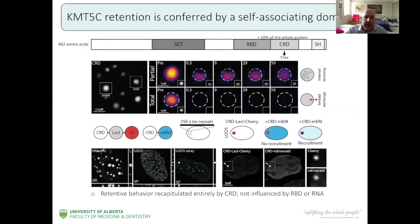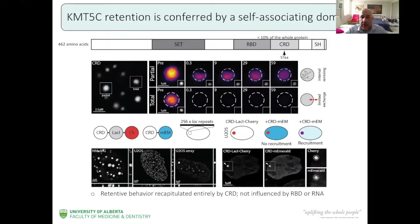We wondered what is responsible for this phenomenon and tried to dissect the protein. KMT5C has a SET domain for methylation, an RNA binding domain, and what we've figured out is that it has a domain we call the chromatin retention domain — only about a tenth of the whole protein, about 57 amino acids. Interestingly, this part of the protein was responsible for the complete dynamic behavior we observed with the full-length protein. We then tethered it to a LAC array with a LAC repressor, transfected another CRD with another fluorescent protein, and could see that they co-localize — they bind each other.